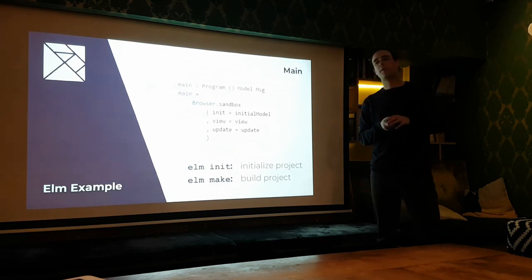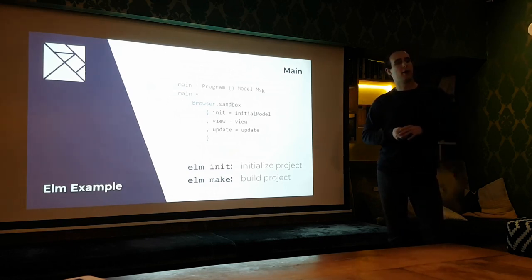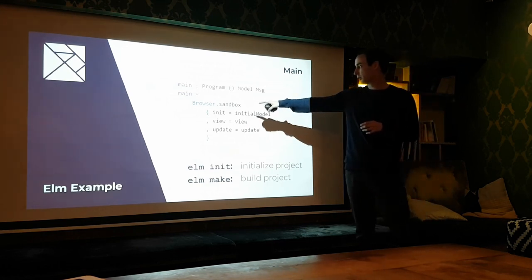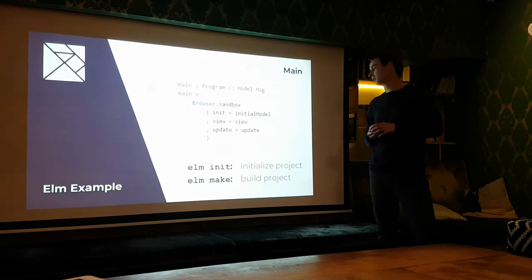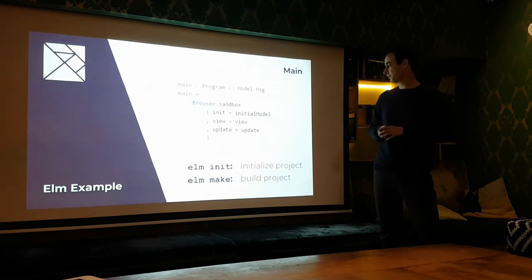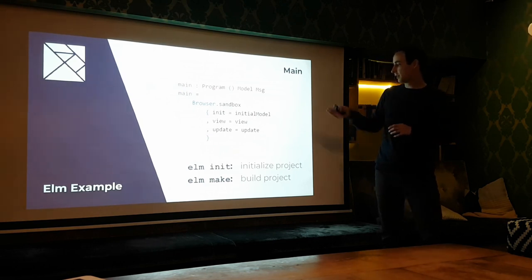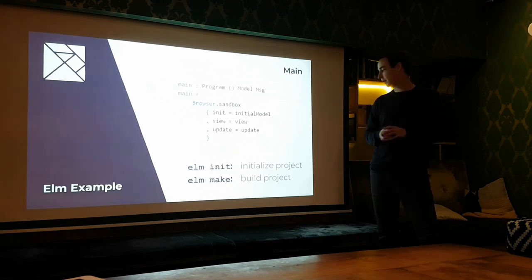Those are already all parts of the architecture. Now it's finally time to specify the main function which gets exported. The web application is composed using the function browser.sandbox, whereby the initial model, the view function, and the update function are passed as arguments. That's all the code required to realize the simple web frontend. There is one command to initialize the project and another to build it, and the result is a simple HTML file containing JavaScript.